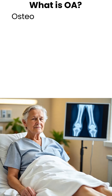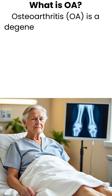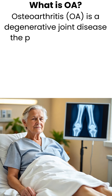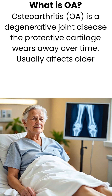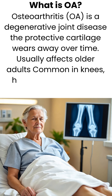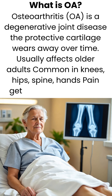What is OA? Osteoarthritis is a degenerative joint disease where the protective cartilage wears away over time. It usually affects older adults and is common in the knees, hips, spine, and hands. Pain gets worse after activity.